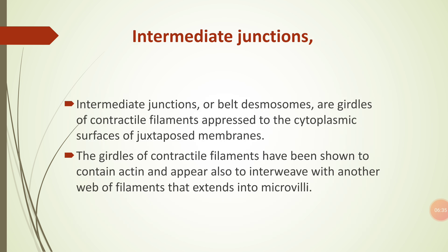The next specialization is intermediate junctions. Intermediate junctions, or belt desmosomes, are girdles of contractile filaments appressed to the cytoplasmic surface of juxtaposed membranes. These girdles of contractile filaments have been shown to contain actin and appear also to interweave with another web of filaments that extend into the microvilli.